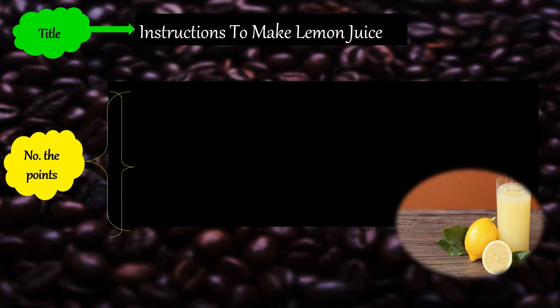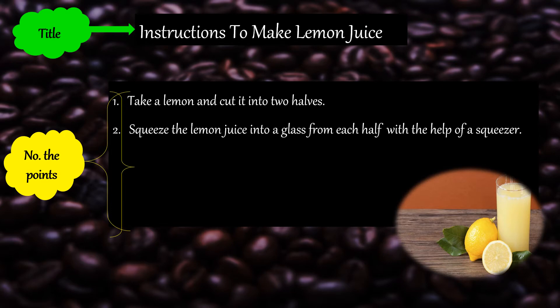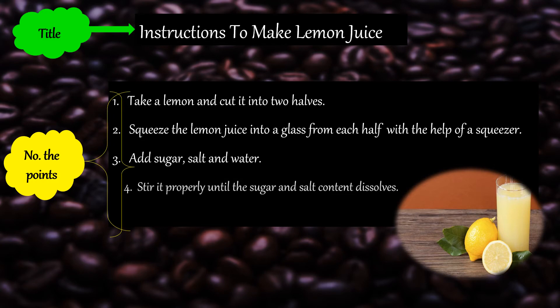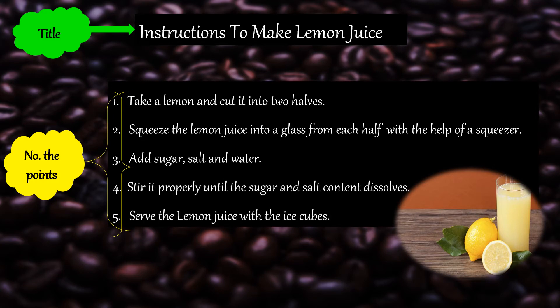As per the rule, we need to number the points. First point: take a lemon and cut it into equal halves. Two: squeeze the lemon juice into the glass. Three: add sugar, salt, and water. After that, stir it properly until the content dissolves in water. Five: serve the lemon juice with ice cubes. This is the procedure for making lemon juice.